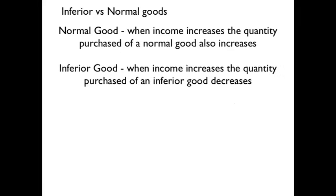And then we talked about previously in the first lecture about normal goods and inferior goods. If it's a normal good, if income increases, the quantity purchased increases. If it's an inferior good, if income increases, the quantity that we consume decreases.